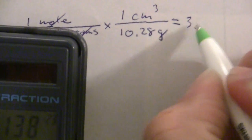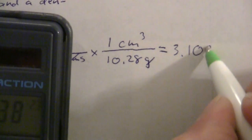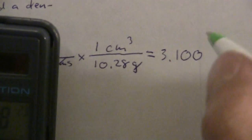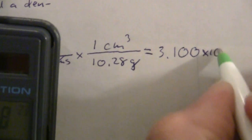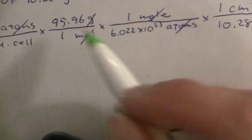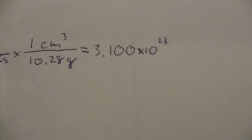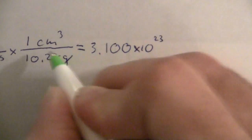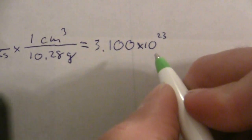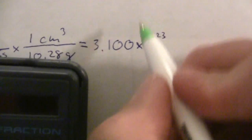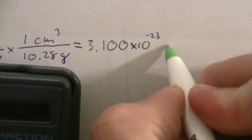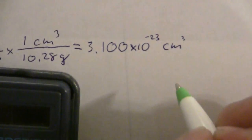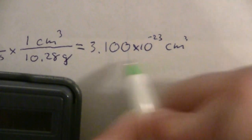So 3.10 and I can go ahead and throw in the other zero there just to keep an extra significant figure. And this is 10 to the minus 23rd. Actually I do have 4 significant figures there so I might as well keep that many. And this is 10 to the minus 23rd cubic centimeters per unit cell.